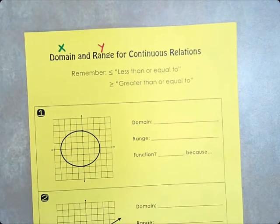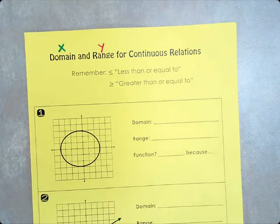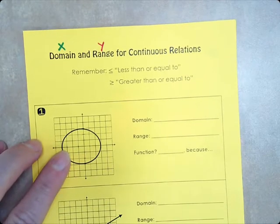Like I was saying a minute ago, with discrete functions, we have individual points. We can number them. We can count them. Continuous, we can't count. There's an infinite number of points on each one of these graphs.